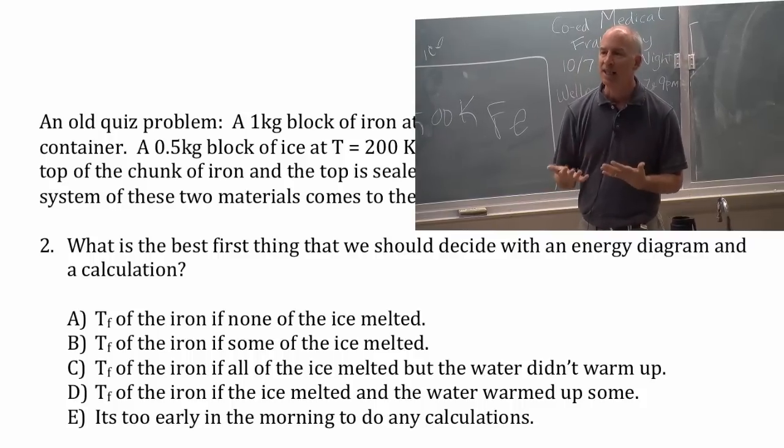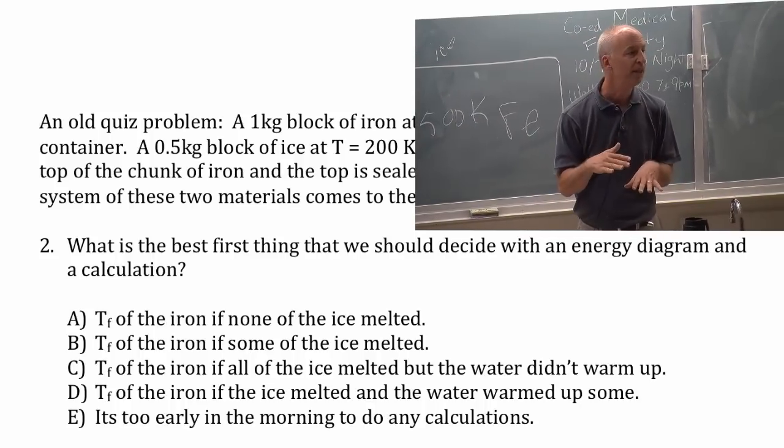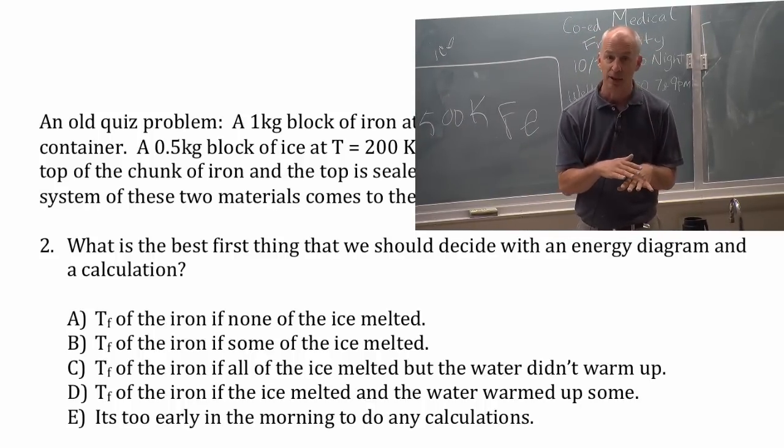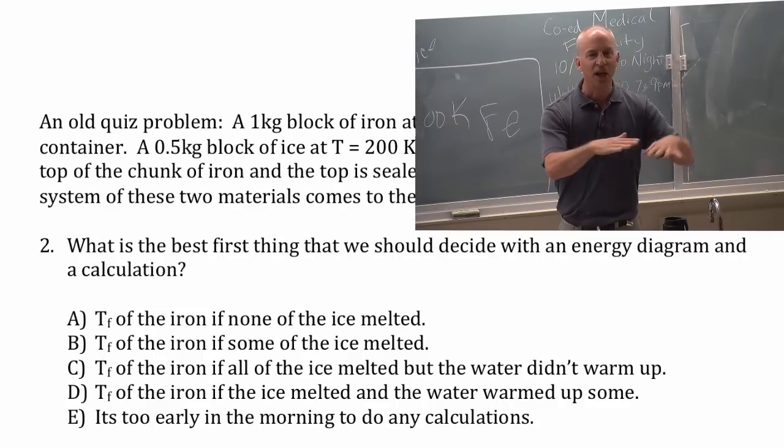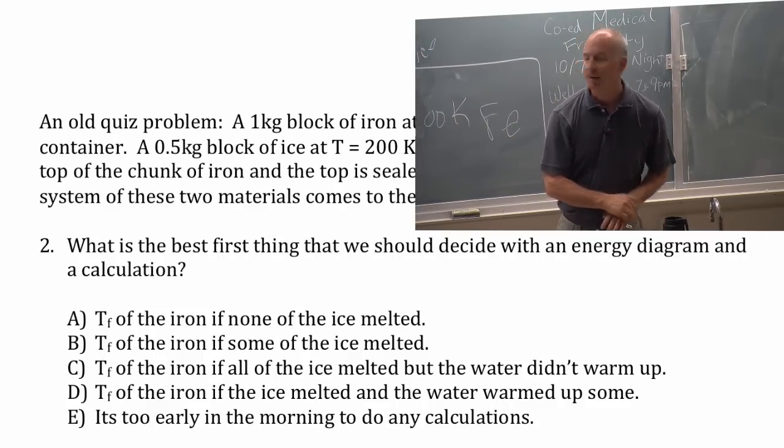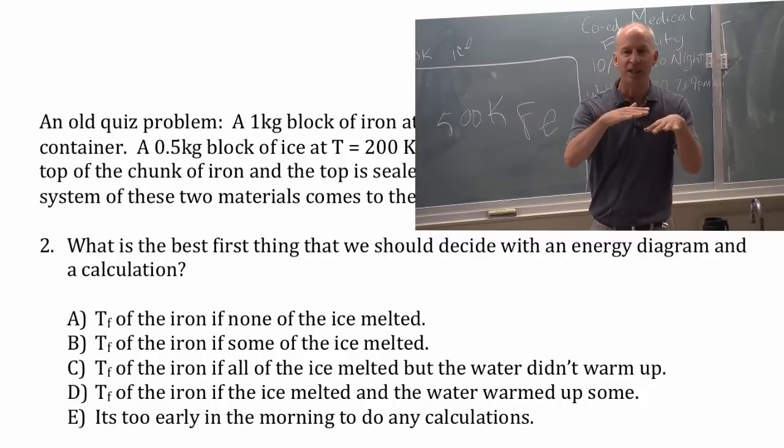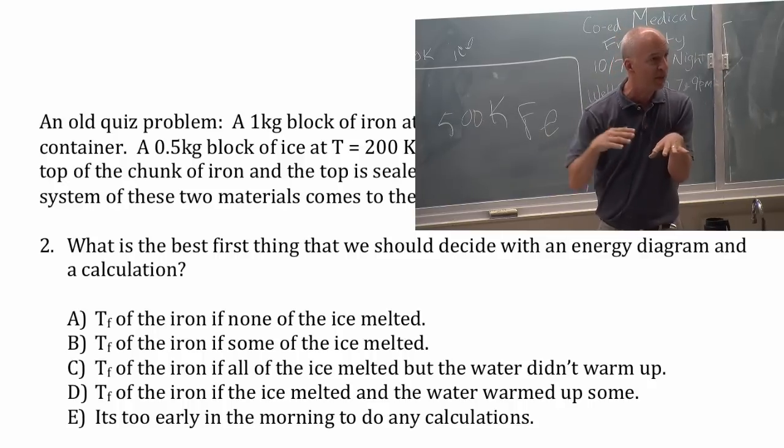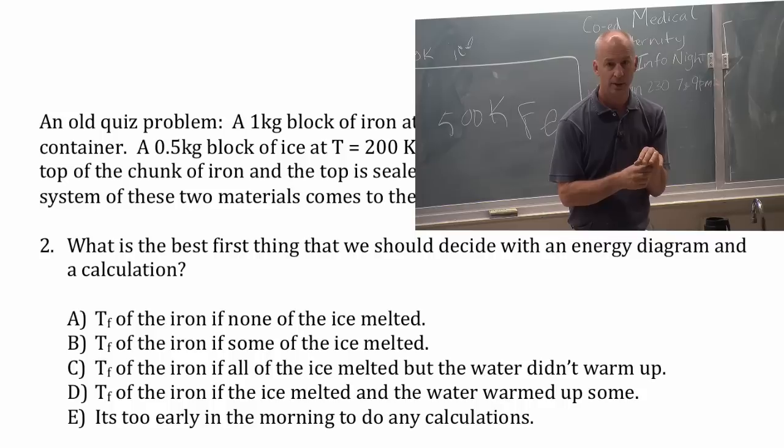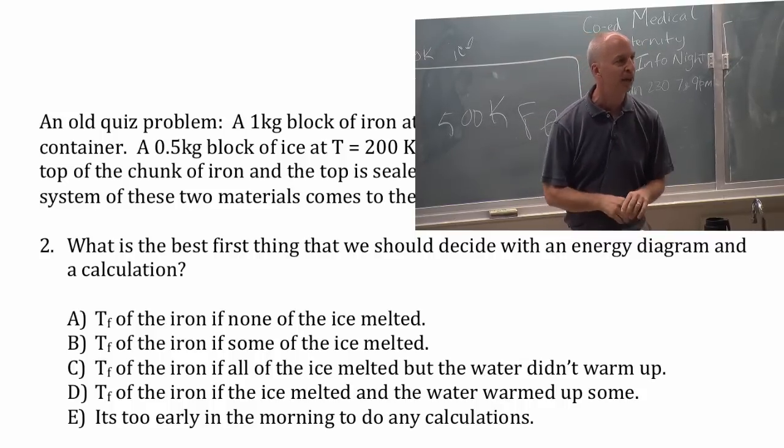You take that amount of energy and you put it into the ice. Then you find out did that get the ice up to 273? Because if it did not, then you still got a ways to go and the whole thing will be less than 273. If it did get the ice, if that's enough energy to get the ice up to 273 and there's some left over from the iron, then it's going to melt some of the ice.